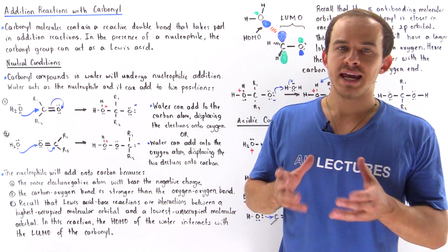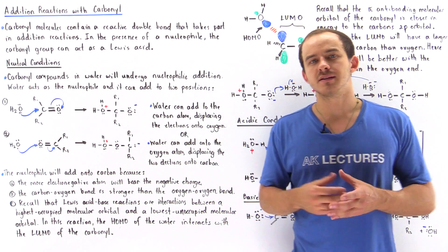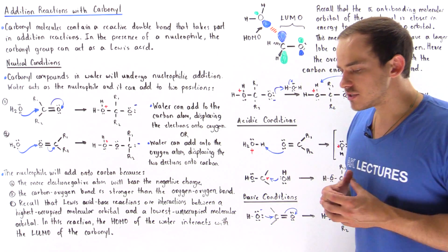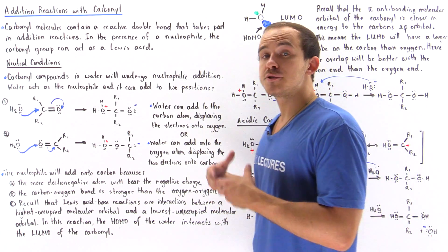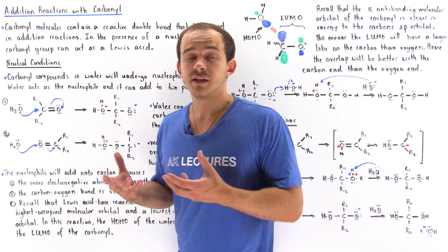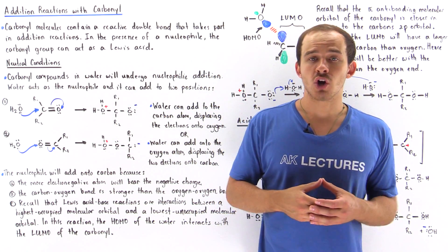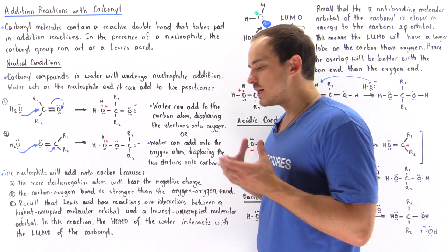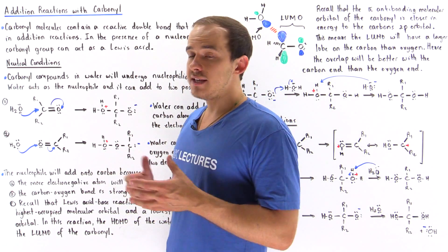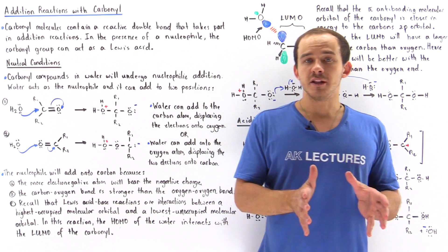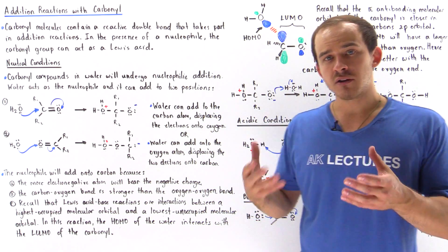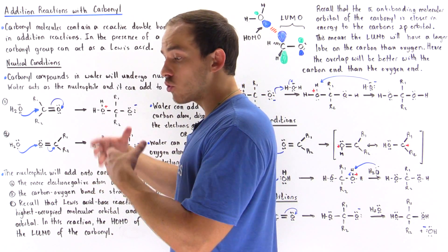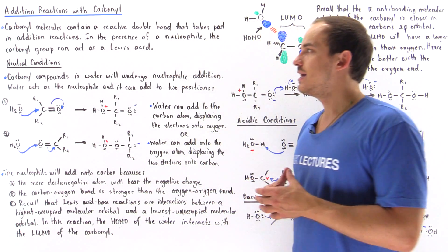Carbonyl molecules contain a double bond that is more reactive than the double bond inside alkenes, and that's because the carbonyl double bond is polar. It contains a bond between an oxygen and a carbon. In the same way that nucleophilic addition reactions of alkenes take place, nucleophilic addition reactions of carbonyl groups also take place, and they're more reactive than their alkene counterparts.